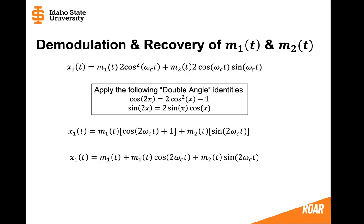of t and one of the terms contains the message 1 by itself and the two other terms are message 1 and message 2 signals and they're being multiplied by cosine and sine waves at the same frequency of 2 omega c.